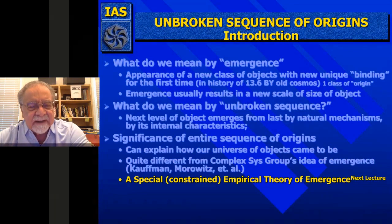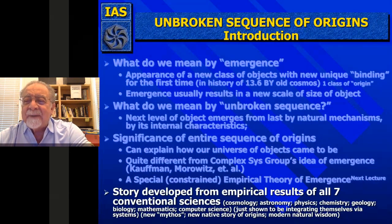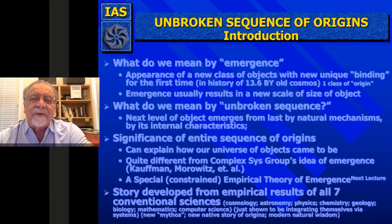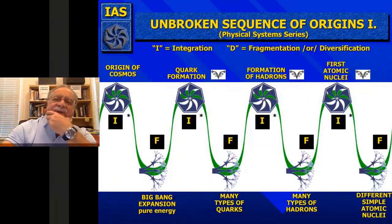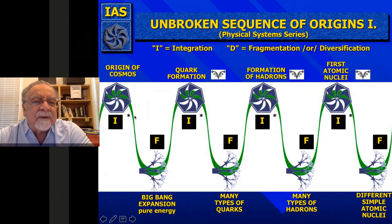Now let's start with the unbroken sequence of origins. Just as an illustration, I'll start with the physical system series. In this diagram you get the basic integration, diversification, integration, diversification, and so on. Every place there's an asterisk, I'm going to talk about the data from that particular discipline that indicates how the integration occurred and how it gives rise to the diversification. The very first one—the origins and types of universe—we can look at the research that's been done on that.